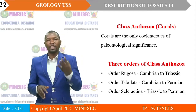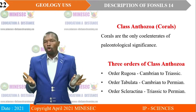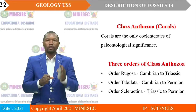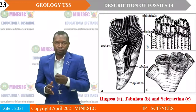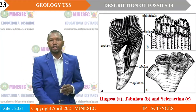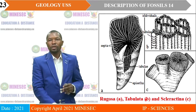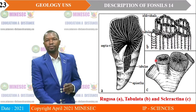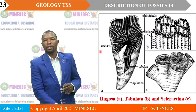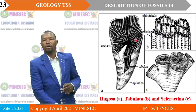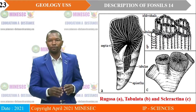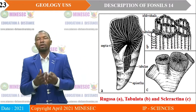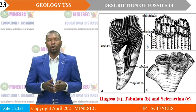This is the shell morphology: A for Rugoza, B for Tabulata — you see the whole structure in the form of columns — and C for Sclerotina. What is peculiar in all three is the presence of the calyx. That is a morphological feature that can be used to identify fossils under the class Anthozoa. So corals are known for the presence of the calyx.